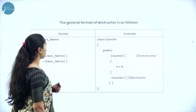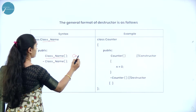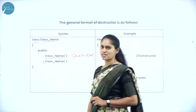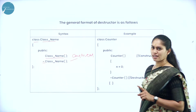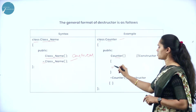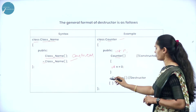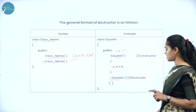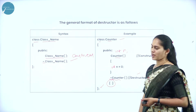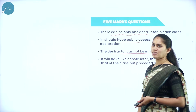We will see the syntax and example for destructor. The general syntax is: class ClassName — ClassName is the constructor; if preceded by tilde symbol then that will be considered the destructor. You can have only one destructor in a single class. For example, class 'counter': 'counter' is the constructor used to initialize — int n equal to 0. Then after this we have a destructor preceded by the tilde symbol. We can have only one destructor and no need to have any function body within the destructor. At last we close the scope of the class.